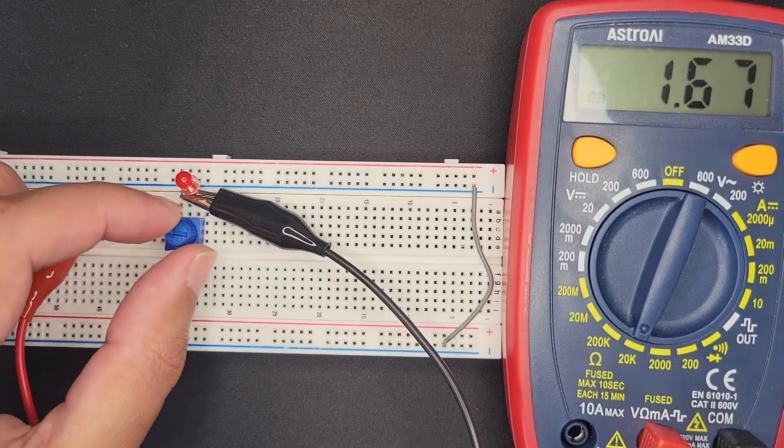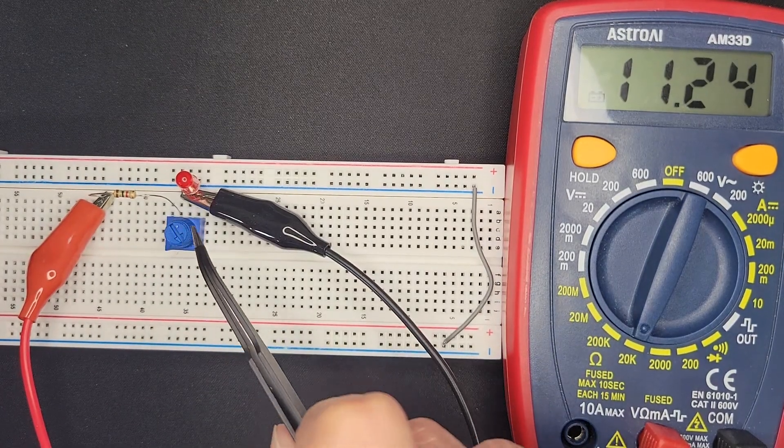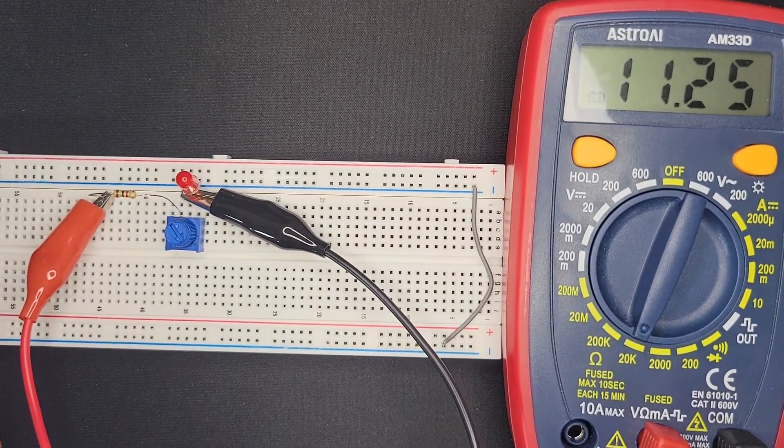But as we turn this potentiometer up, then we can see our resistance going very, very high, which will of course reduce the current going to the LED. And that's why the LED gets dimmer in this configuration.